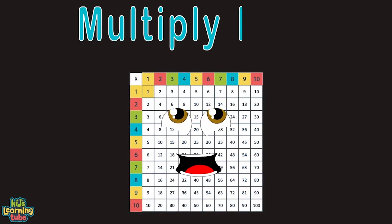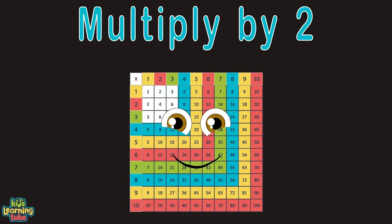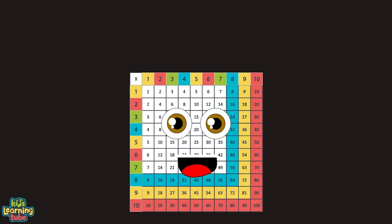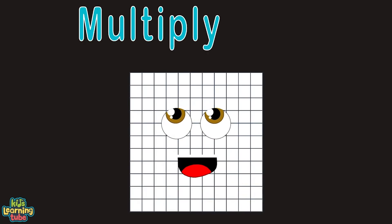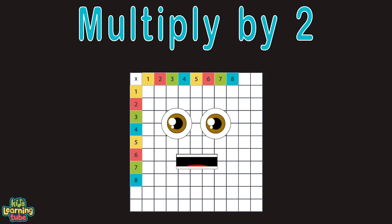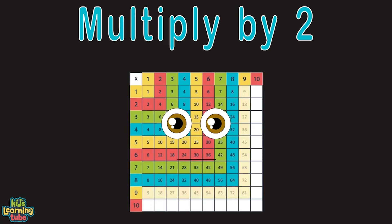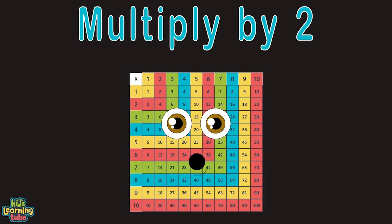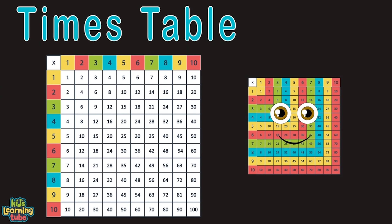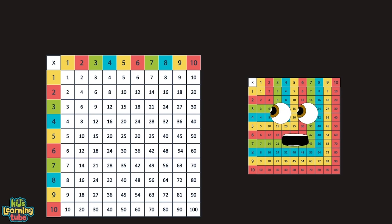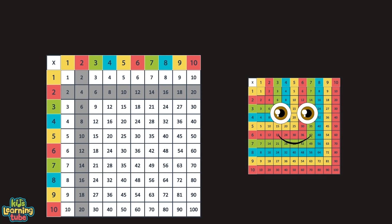Let's multiply by two, all the way up to ten. We'll multiply by two, then we'll do it again. When we multiply by two, you'll use a times table. It's a fun, easy way to learn because you're able. Let's count by twos, and we'll make it rhyme. Then you'll find multiplication is a good time.